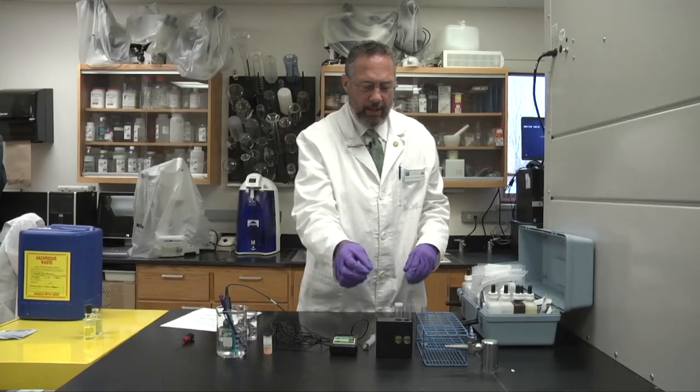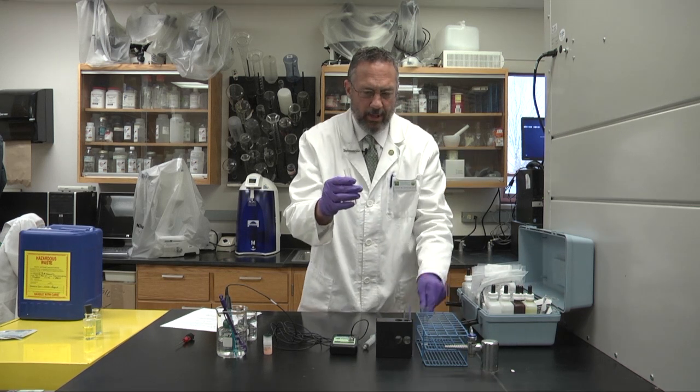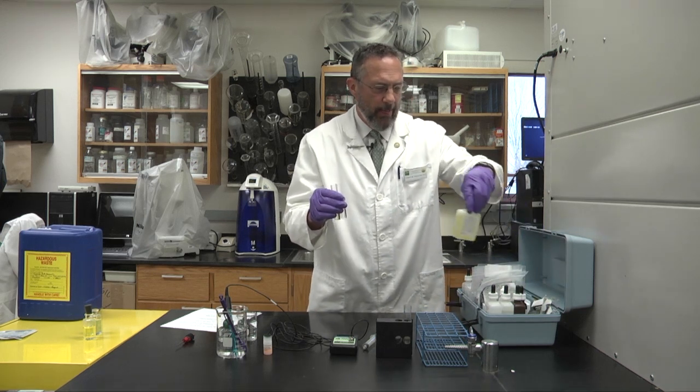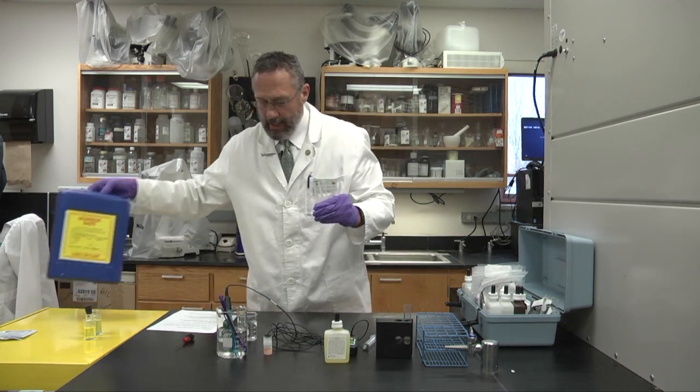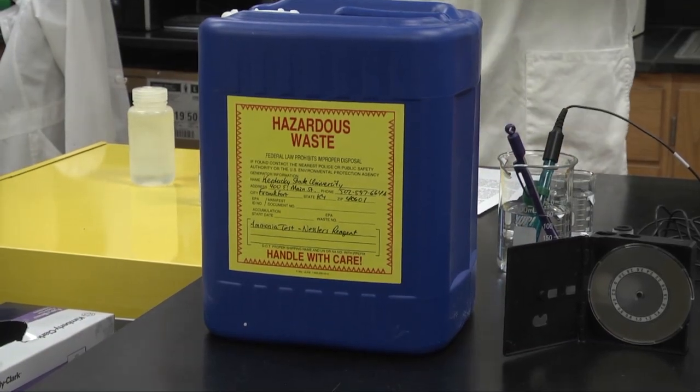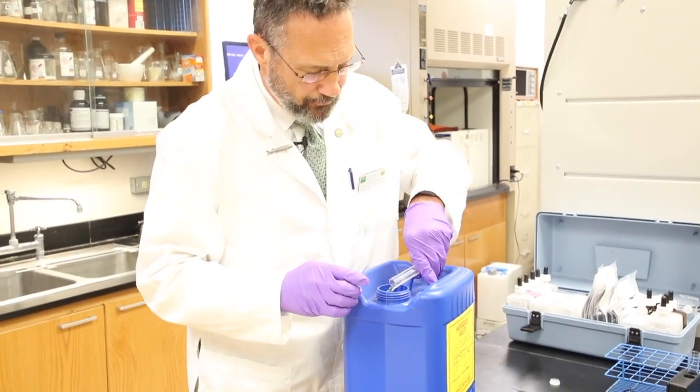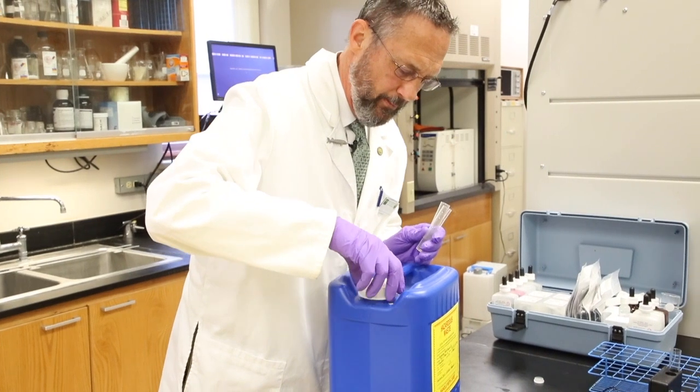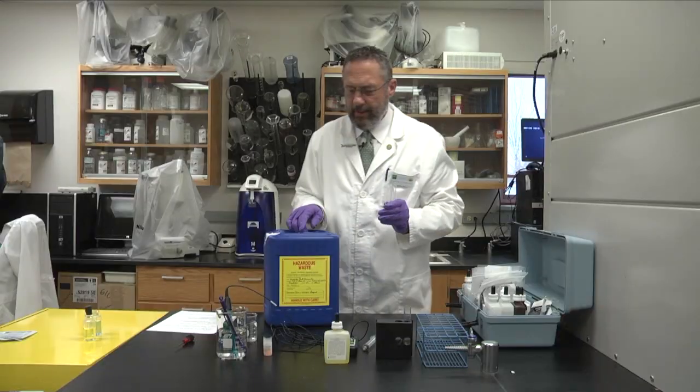When we're through with these tests here this is especially important. When we're dealing with Nessler reagent, Nessler reagent which we used in this test has mercury in it and this waste container here is specifically designed to hold mercury waste from the Nessler reagent. And these are very important procedures to do because we don't want to contaminate our water supply or aquifers in the state might get contaminated if we simply dump these down the sink.